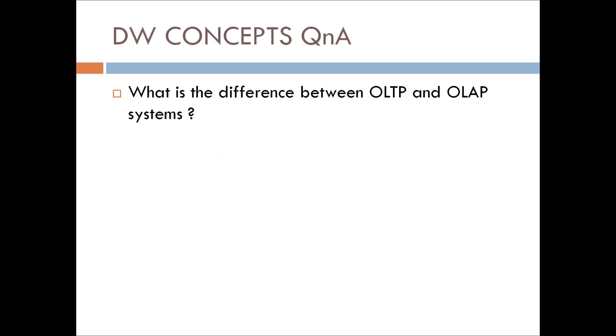So this is the first question: What is the difference between OLTP and OLAP systems? OLTP means Online Transactional Processing systems, OLAP means Online Analytical Processing systems. Pause and think of the answer.